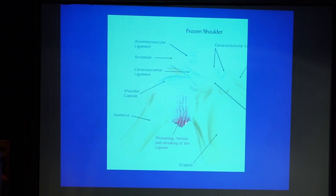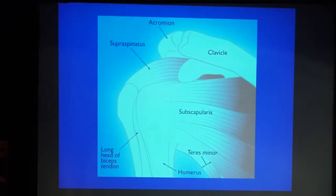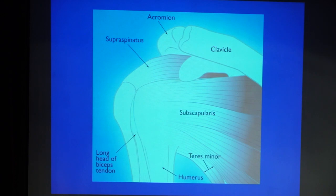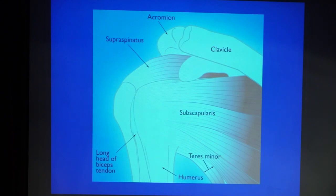In frozen shoulder, the inferior part of the capsule — which needs to have slack for normal movement — becomes obliterated and thickened. This is the acromion; this is what we call the rotator cuff. These muscles can get damaged and cause pain, but in those patients the external rotation will be normal. So you can easily make a diagnosis. Check the external rotation: if restricted, frozen shoulder; if normal, subacromial pain.